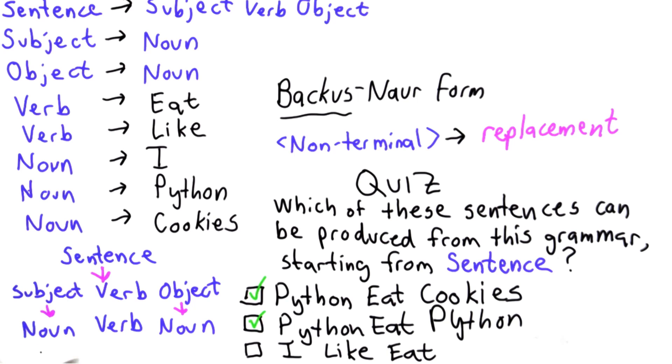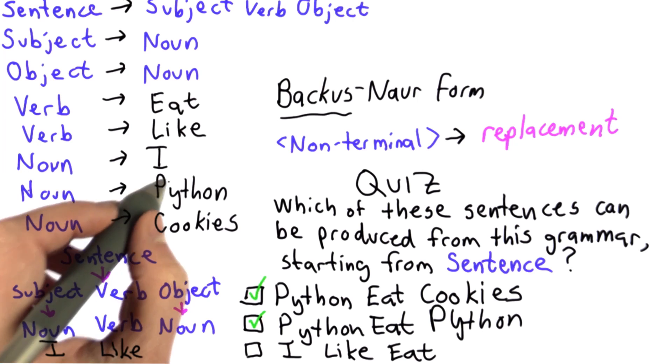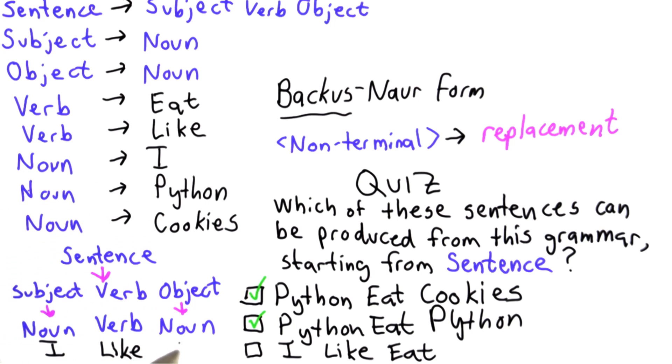There's no way to produce the third one. We can get close - we can turn the noun into I following this rule, we can turn the verb into like following this rule. We can't turn the noun into eat. The noun can be either I, Python, or cookies. That's why we can't derive the third sentence.